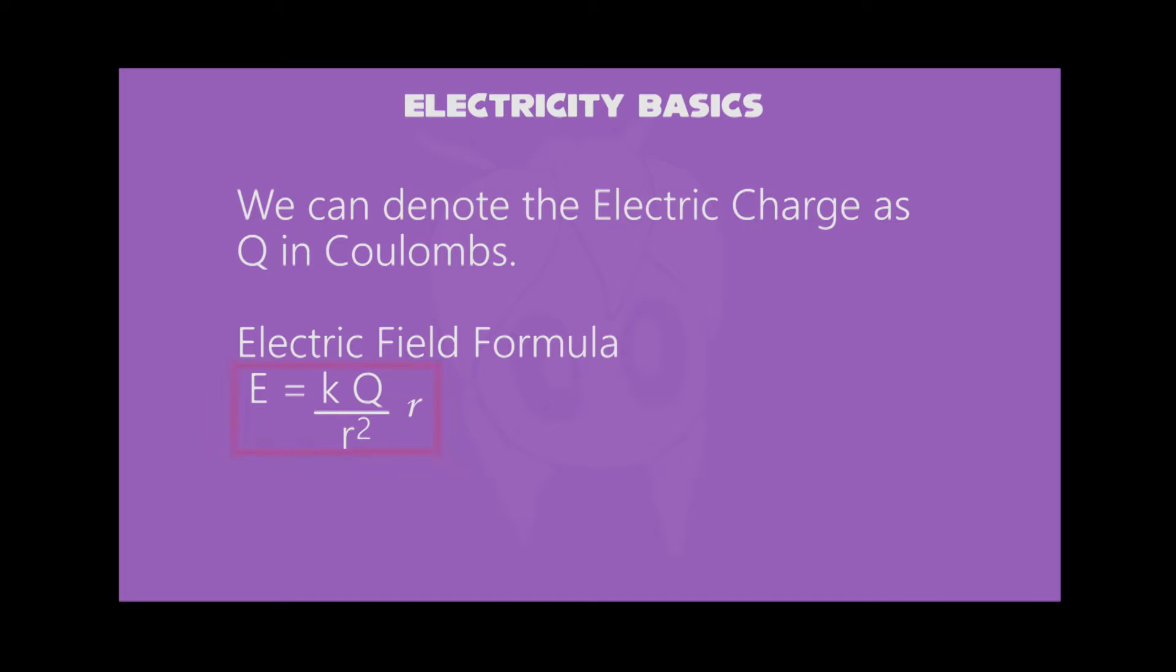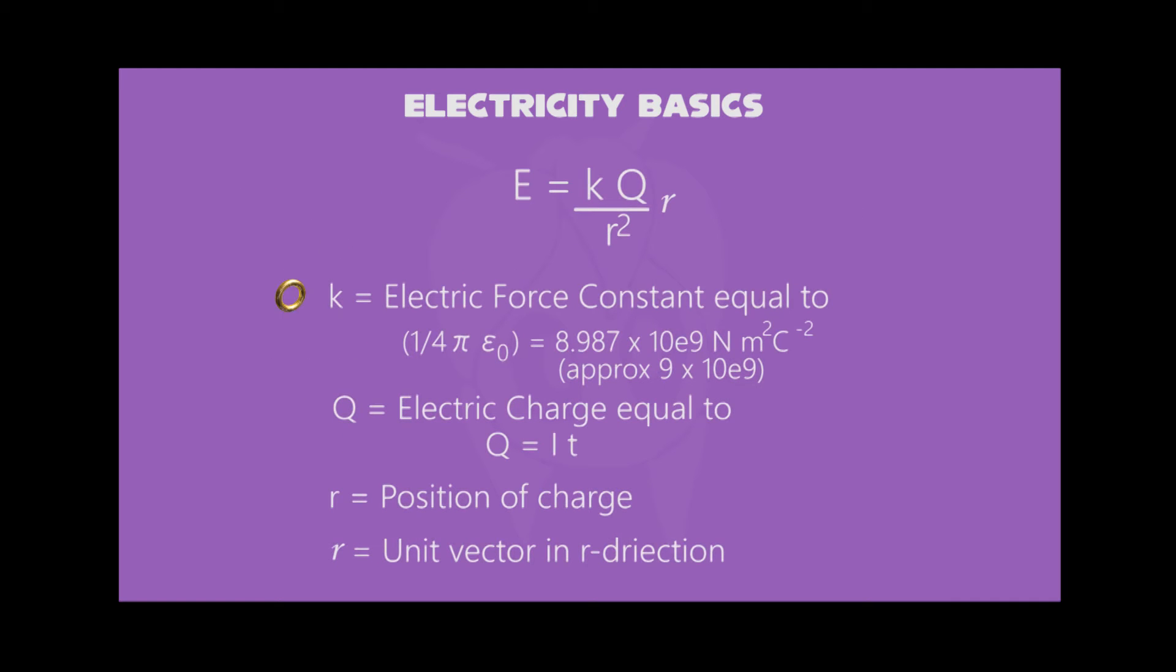The electric field formula is given by E equals KQ divided by R squared, with a unit vector R. Where K is electric force constant, we can write K equals 1 divided by 4 pi epsilon naught, which is also equal to 8.987 times 10 to the 9th newton meter squared per Coulomb squared.